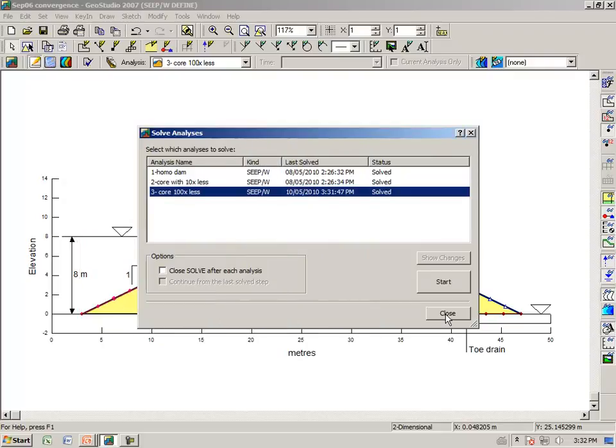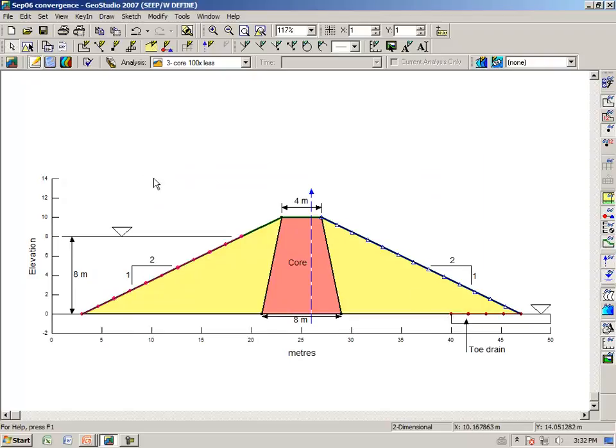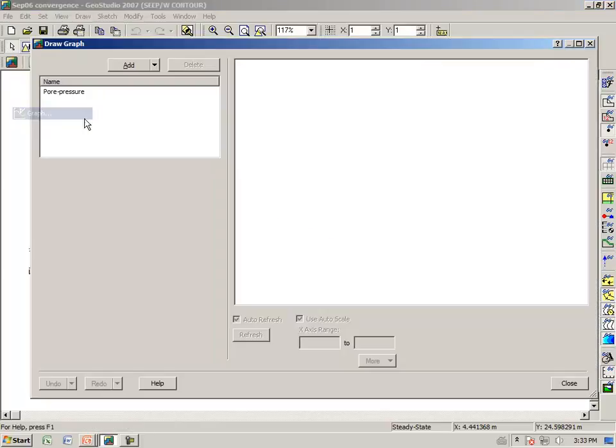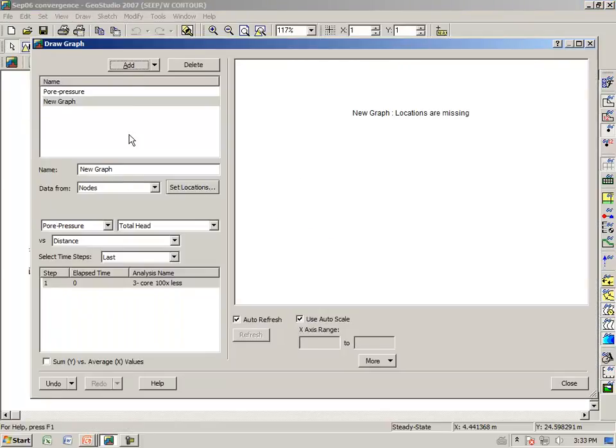Now let's say that you had set up a fairly large problem and you wanted to allow the solution to proceed without your attendance. And later you come back and you want to check the convergence. Another way to do this is to go to the results view, draw a graph, add a new graph, convergence.